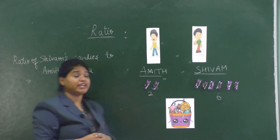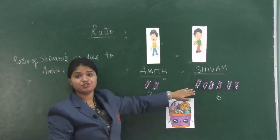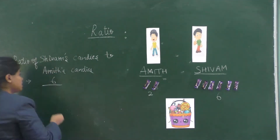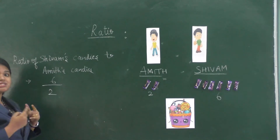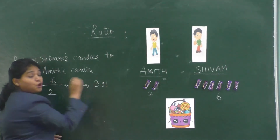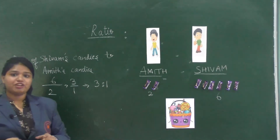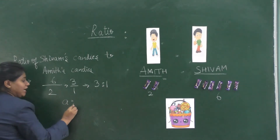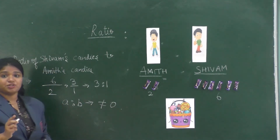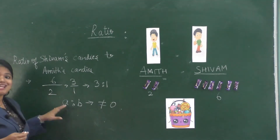We use the symbol of colon to depict ratio and it is read as 'is to'. In the above example, the ratio of Shivam's candies to Amit's candies is six by two, which simplifies to three by one, written as 3 is to 1. In general, the ratio between two numbers a is to b, where a and b are not equal to zero.